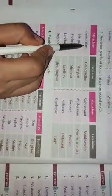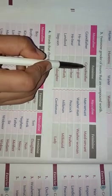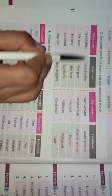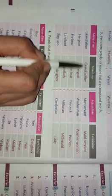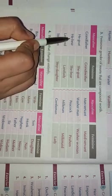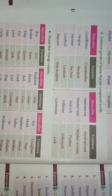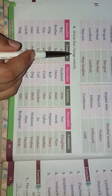In compound words, we change the key word to form the feminine. For example, grandfather becomes grandmother. Similarly: man-servant becomes maid-servant, washerman becomes washerwoman, peacock becomes peahen, milkman becomes milkmaid, gentleman becomes lady.